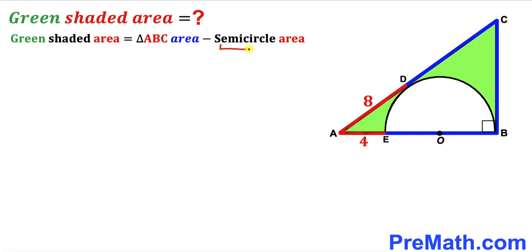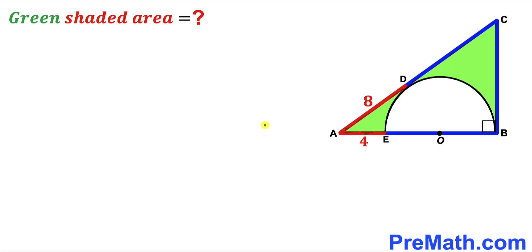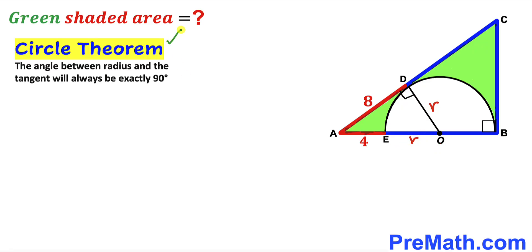In order to calculate the area of the semi-circle, we must find the radius r first. We connect center O with point D. We can see that OD represents the radius of the semi-circle — labeled lowercase r. Likewise, EO also represents the radius, also labeled r. Recalling the circle theorem: the angle between the radius and the tangent line is always exactly 90 degrees.